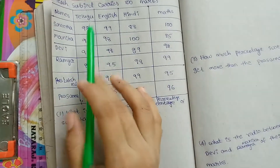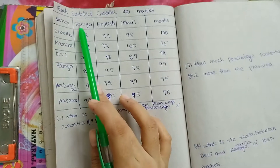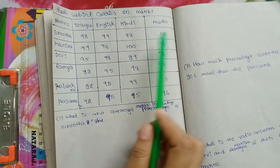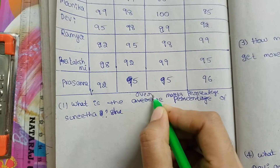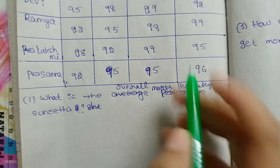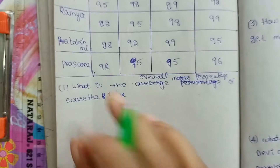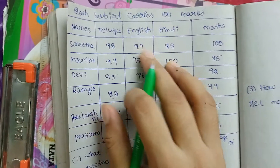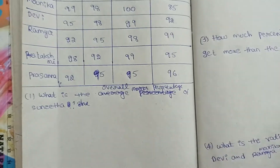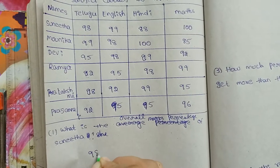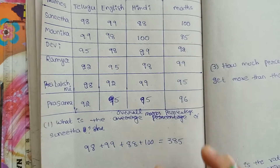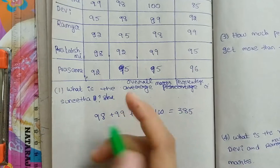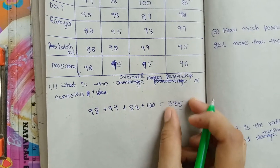Sorry, not average percentage — overall percentage of Sunita. First, how many total marks has Sunita scored? 98 plus 99 plus 88 plus 100. Adding those up: 98 plus 99 plus 88 plus 100 equals 385.